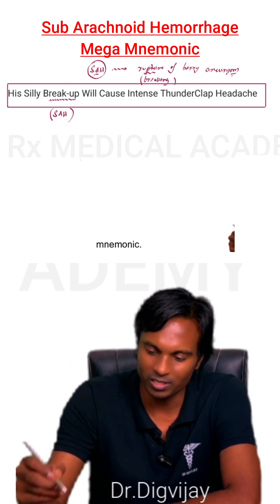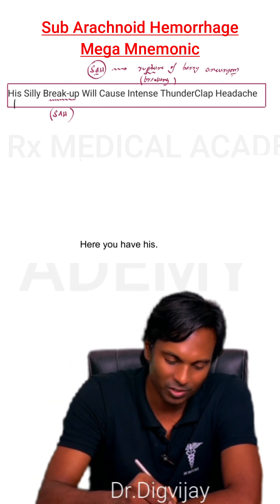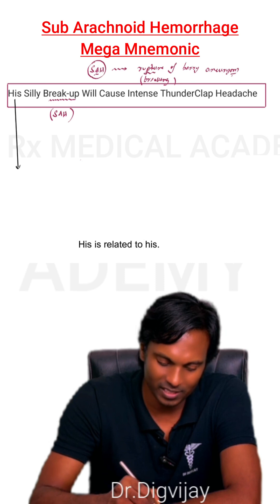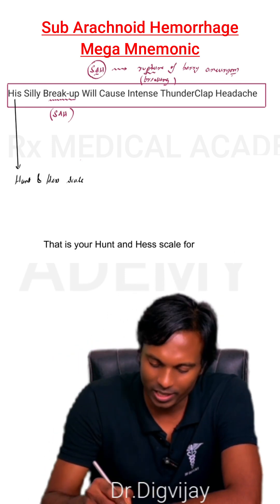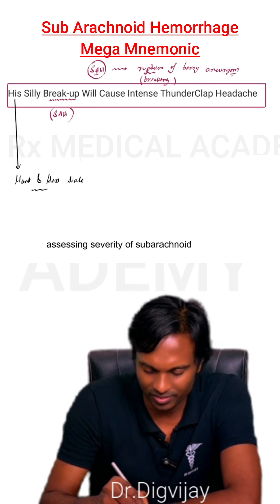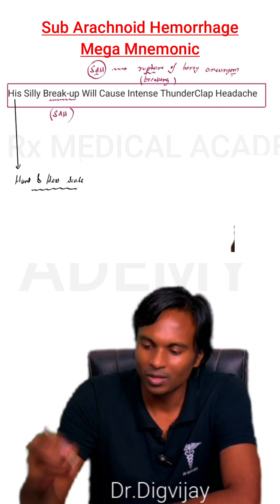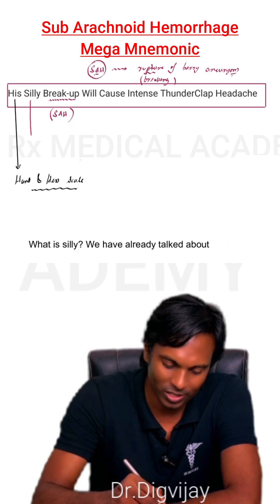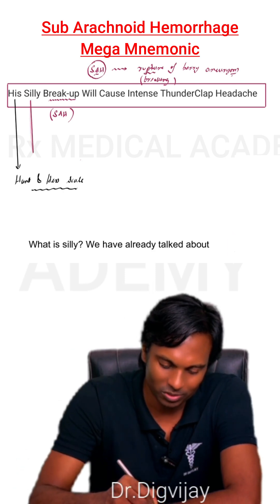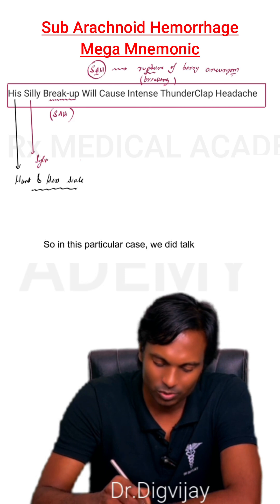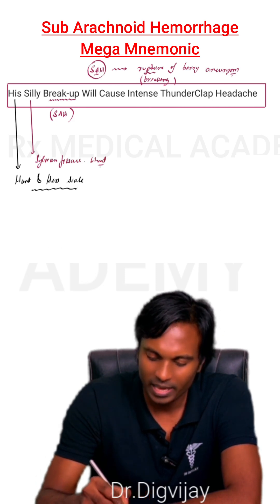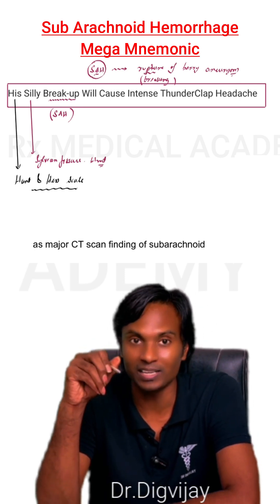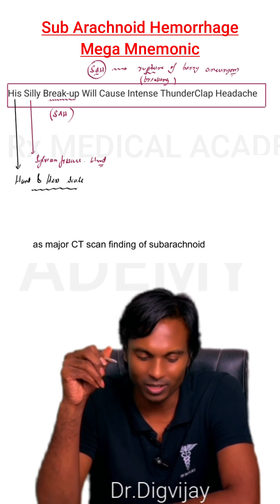Now let's decode this mnemonic. Here you have 'HIS.' HIS is related to the Hunt and Hess scale for assessing severity of subarachnoid hemorrhage. 'Silly' relates to the sylvian fissure — we talked about blood in the sylvian fissure as a major CT scan finding of subarachnoid hemorrhage.